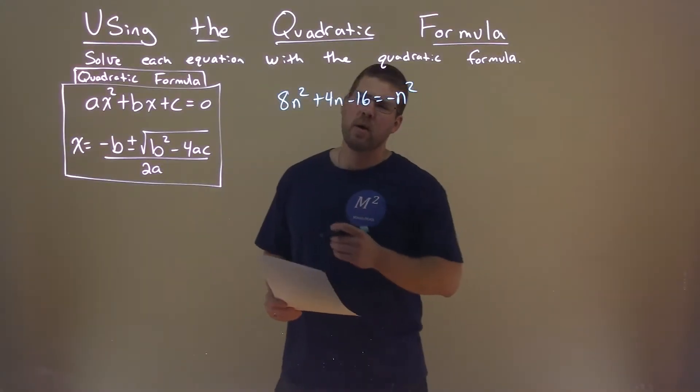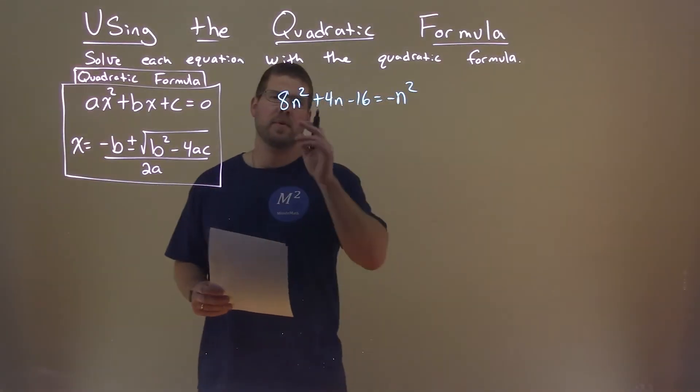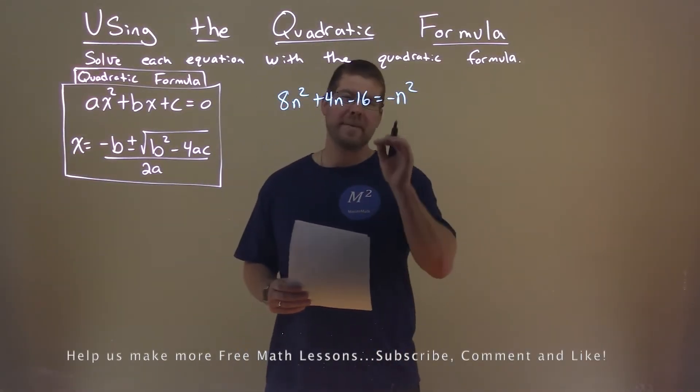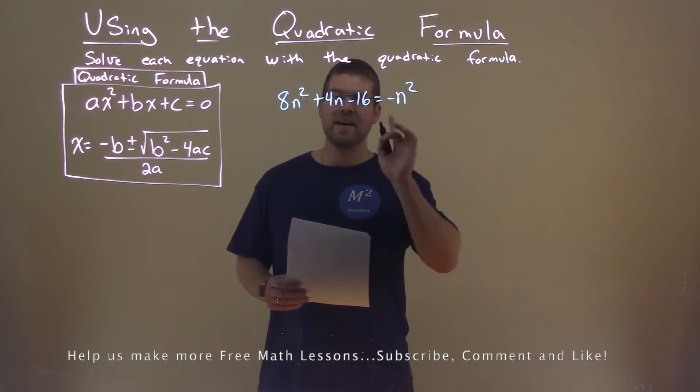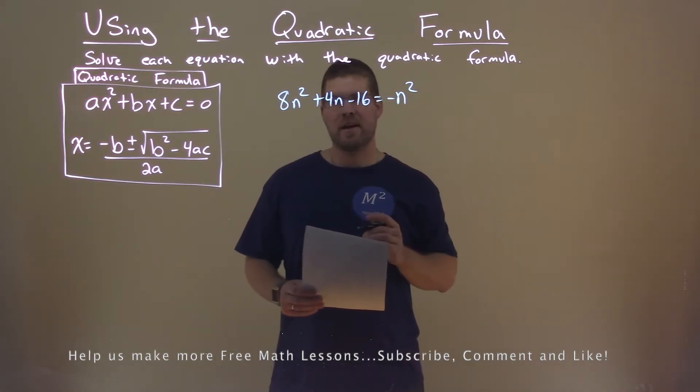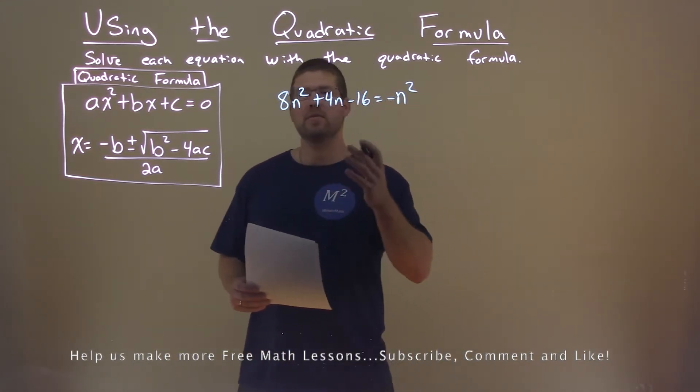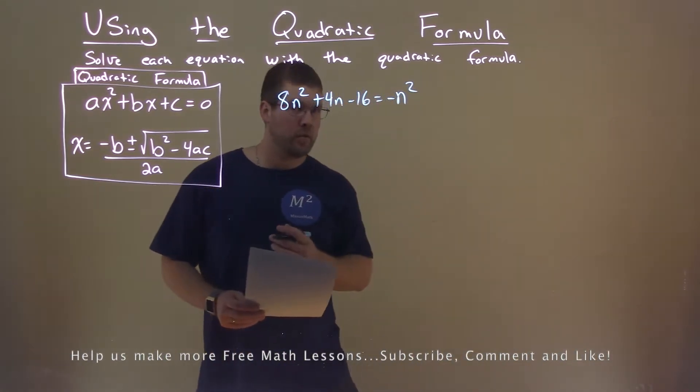We're given this problem right here: 8n squared plus 4n minus 16 equals negative n squared, and we want to solve this using the quadratic formula.